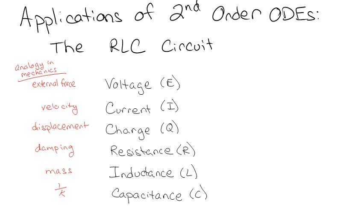If you think about voltage, voltage is like a force on a circuit — it makes the charges move, so you can think of it as an external force. Current is basically how fast those charges are moving, so it's velocity. Charge itself is like displacement. Resistance basically keeps charges from moving, so think of that as damping, like with a spring. Inductance and capacitance can act kind of like mass and a spring constant.